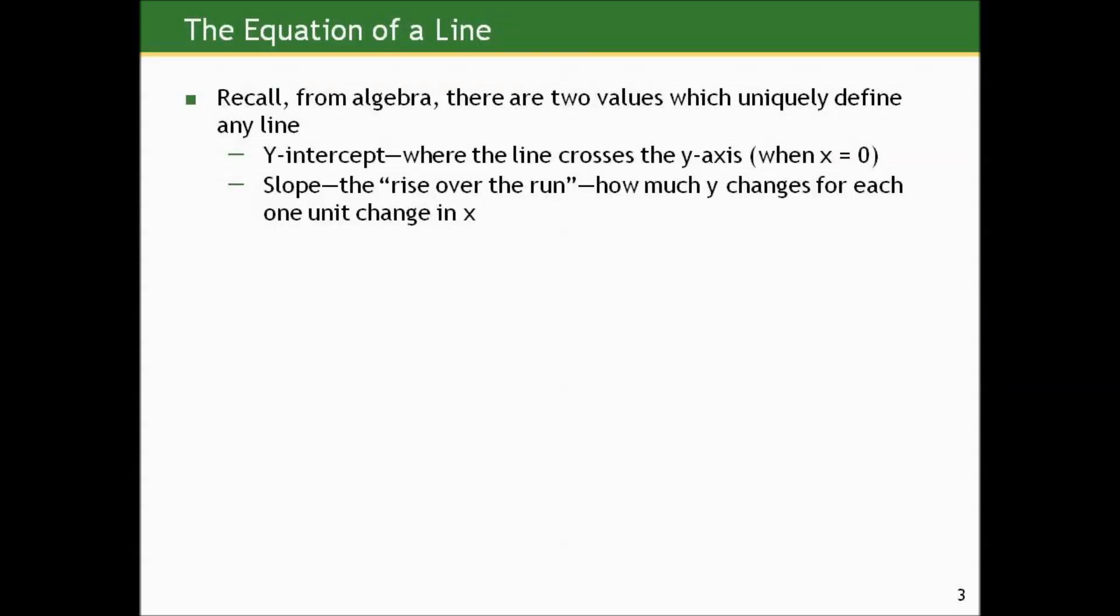Recall from your algebra days there are two values which uniquely define any line in two-dimensional space. There's the y-intercept, where the line crosses the y-axis when x equals zero. And the slope, sometimes called the rise over the run, how much y changes for each one unit change in x. The slope determines the slant and direction, and the y-intercept determines where you put the line on a graph.